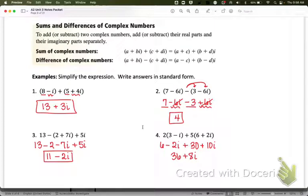So here's what we get. First case here on number 3, we have to distribute this negative. And once we do that, we combine our like terms and you should get 11 minus 2i. And then on number 4, we need to distribute the 2 first. That's how we get 6 minus 2i. And then we distribute this 5. We get 30 plus 10i. And when we combine our like terms, that's how we end up with 36 plus 8i.